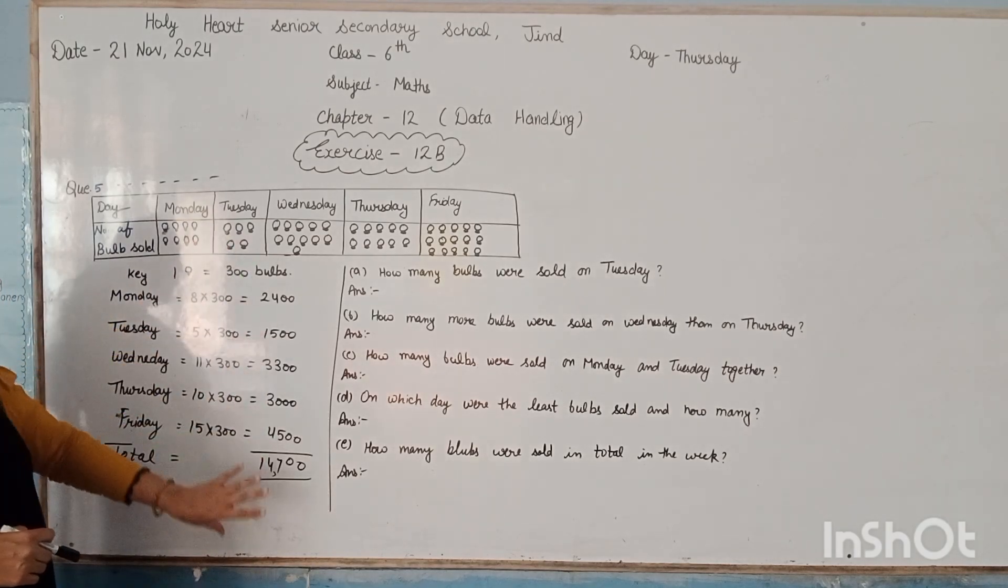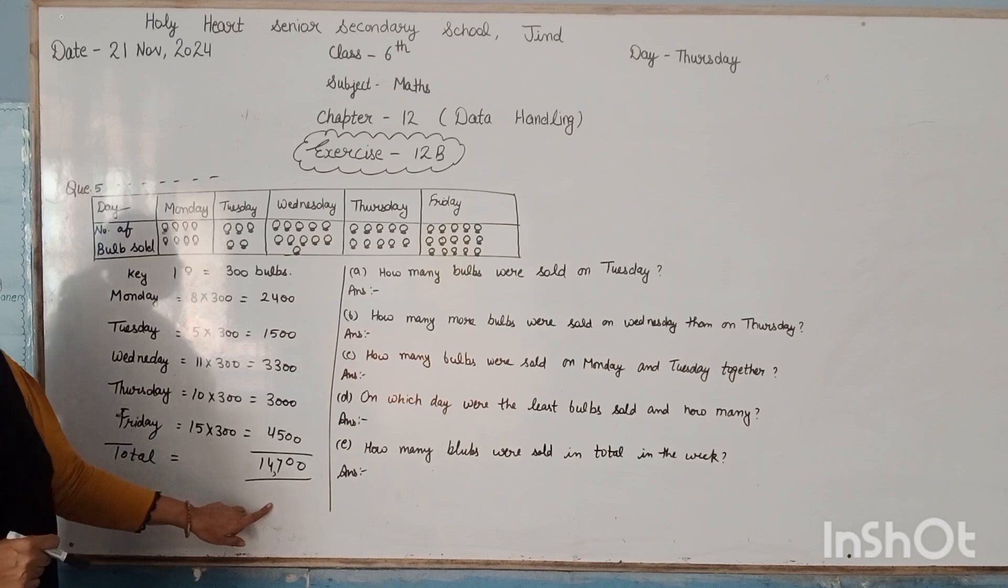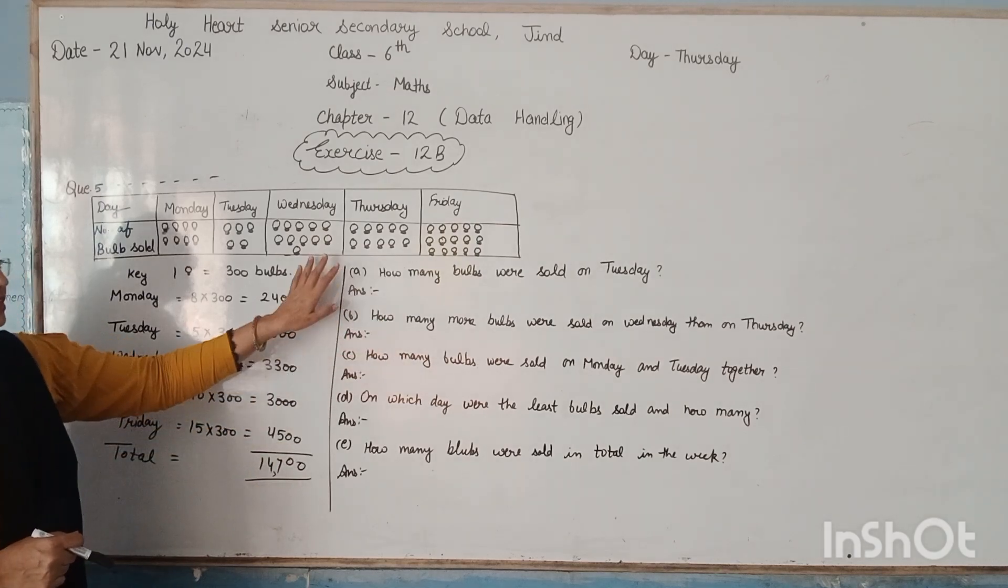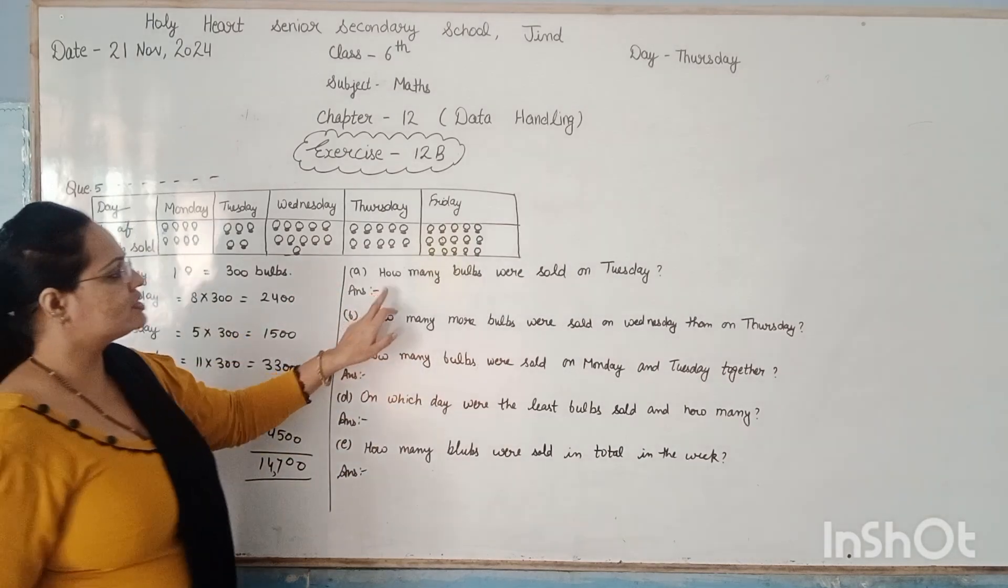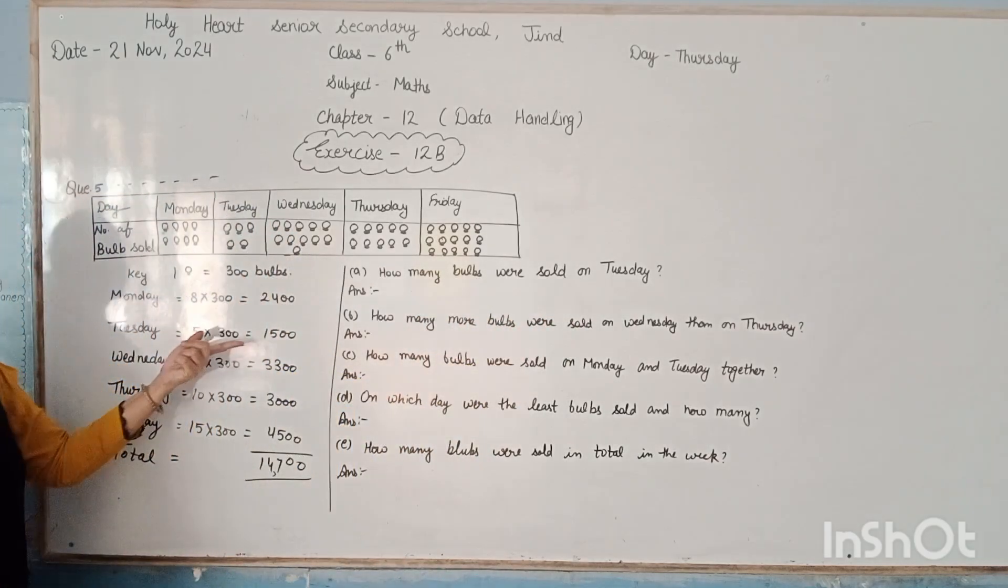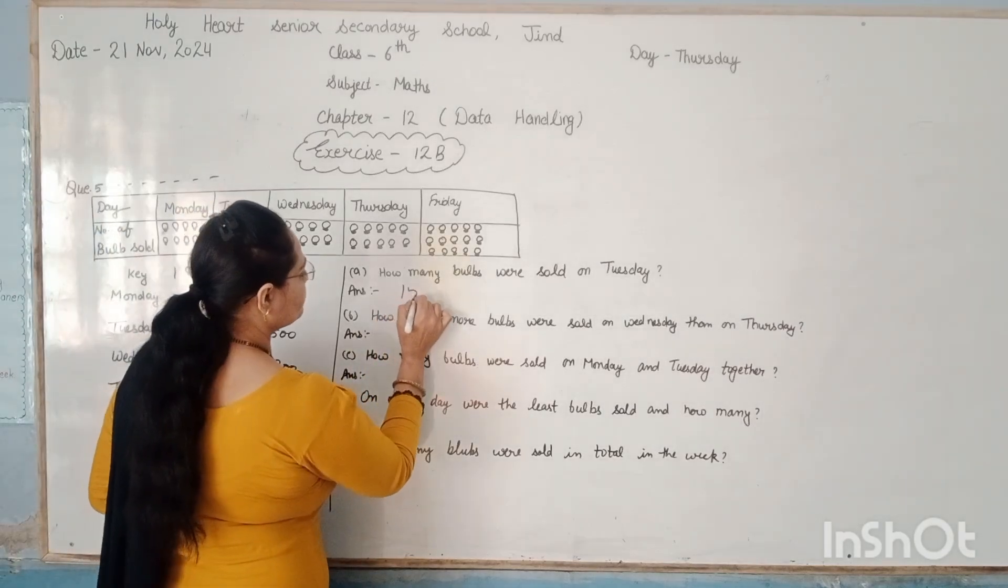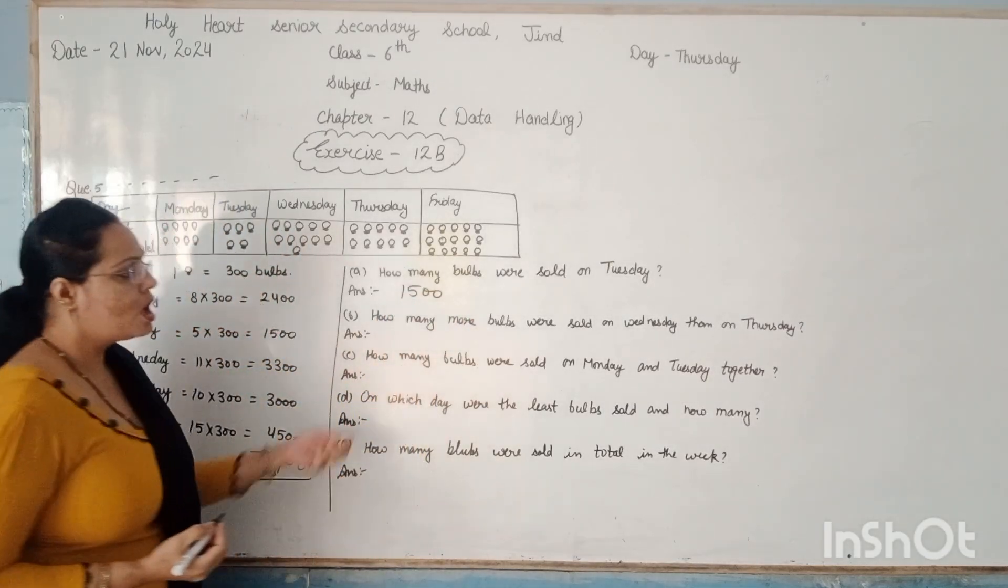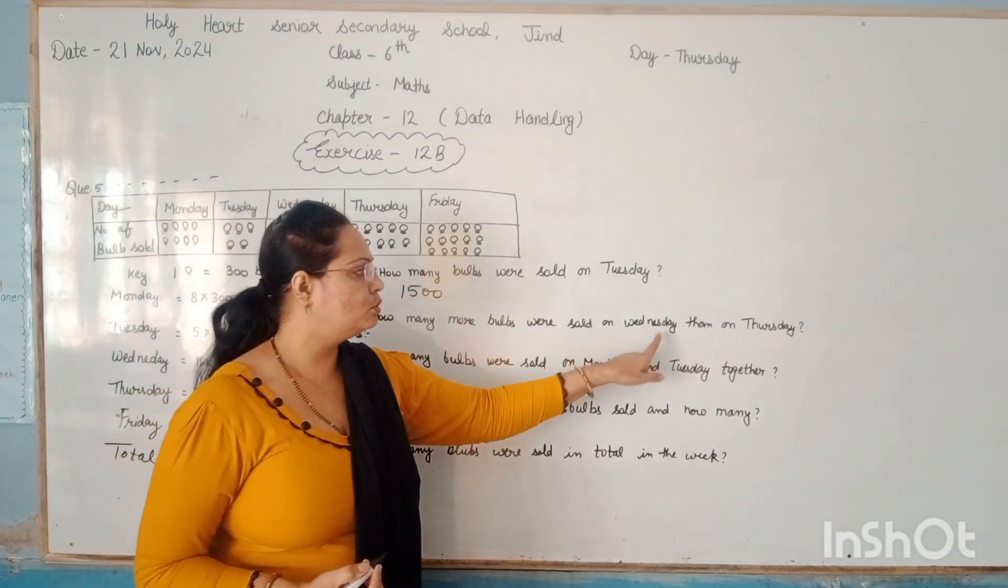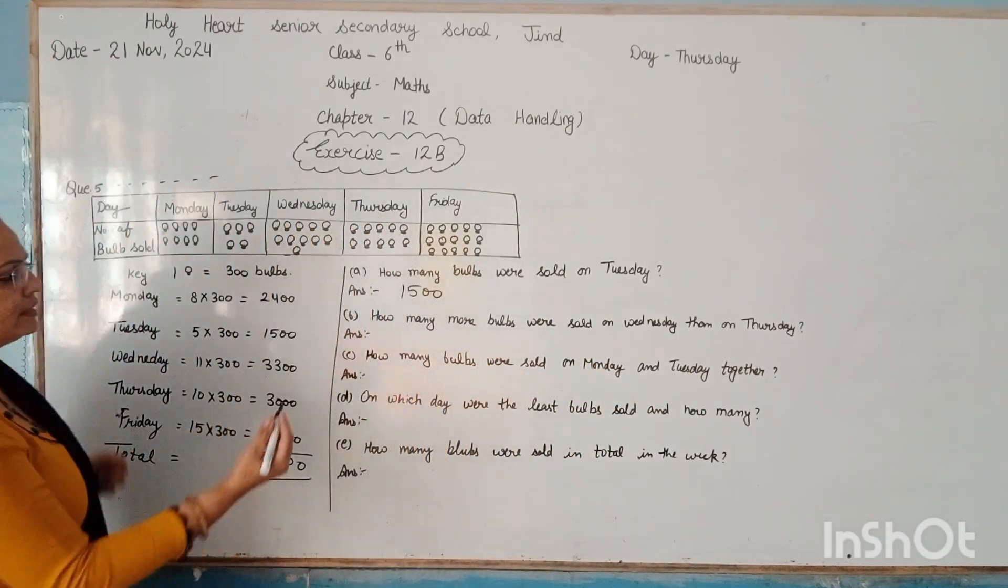This type of table they give you, and here we find the number of bulbs. On behalf of this table, we give the answer to these questions. So first question is: how many bulbs were sold on Tuesday? So check your table. On Tuesday, how many bulbs are sold? 1,500. How many more bulbs were sold on Wednesday than on Thursday?